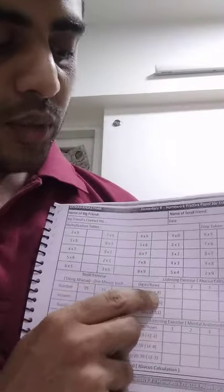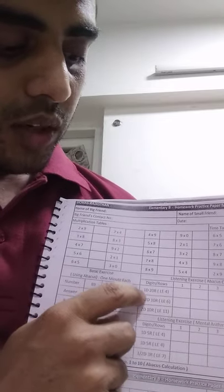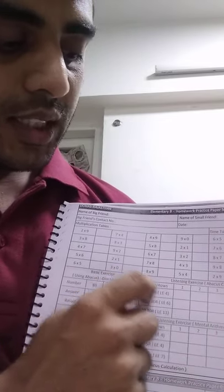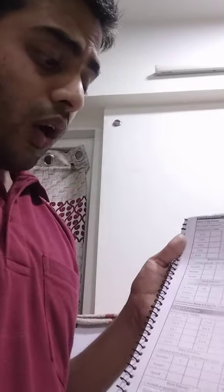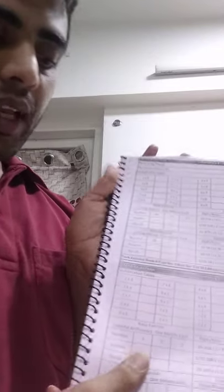Important thing is that we understand what does it mean when we say 1 digit 20 rows. So 1d 20r is 1 digit 20 rows. 1 slash 2d means 1 digit and 2 digit mix, and question will be of 10 rows, means there will be 10 numbers in total to add and subtract.